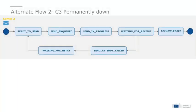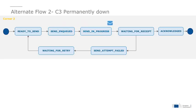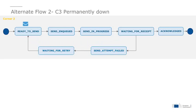As discussed in previous videos, when C2 sends a message to C3, the message adopts different statuses as it has been processed, from ready to send to waiting for receipt. In the situation where it is waiting for a receipt, it's expecting an acknowledgment from C3. In the event that C3 is unavailable, the message will go to send attempt failed, waiting for retry, and then it will resend the message.